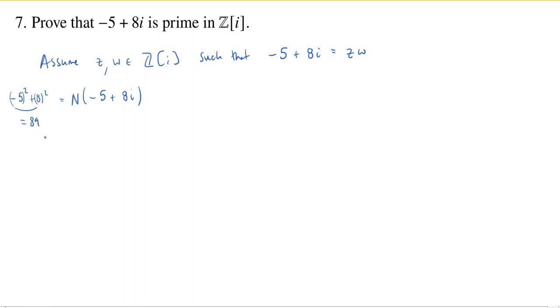Now before we go any further, one very easy observation is that 89 is prime. And that's a really good start if you're trying to show a given Gaussian integer is prime, if you can show that the norm is prime.